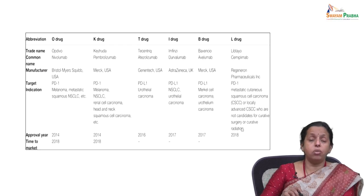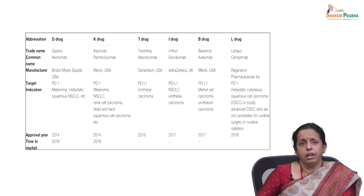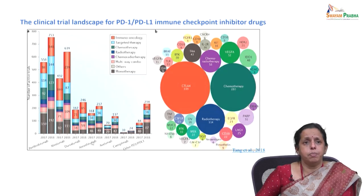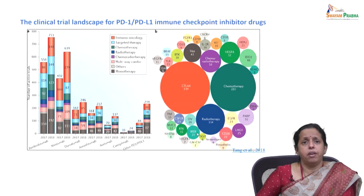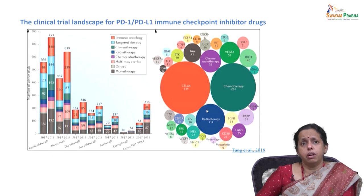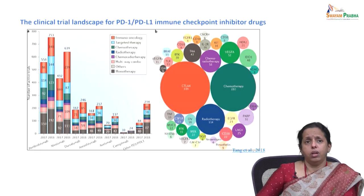These drugs are not only used as monotherapy but also in combination with surgery or radiation procedures. The landscape of clinical trials from 2017 to 2018 shows different trials for PD-1 and PD-L1 immune checkpoint inhibitor drugs, many still in progress. Each bubble represents the number of clinical trials, including combinations with targeted pathway drugs, chemotherapy, CTLA-4, or radiotherapy.